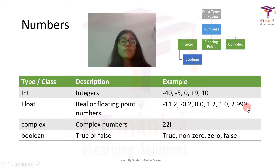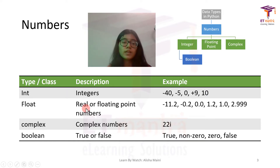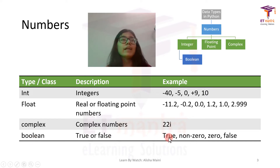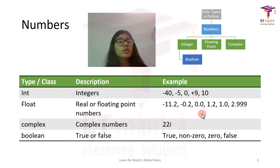We also have complex numbers, like 22 iota, and you can even have 2 iota plus 1, and so on. Then we have boolean values — true or false. Any non-zero value will stand for true, and 0 will always stand for false.